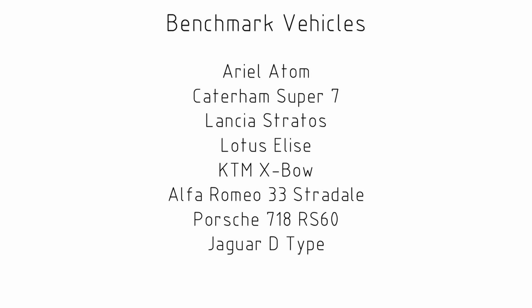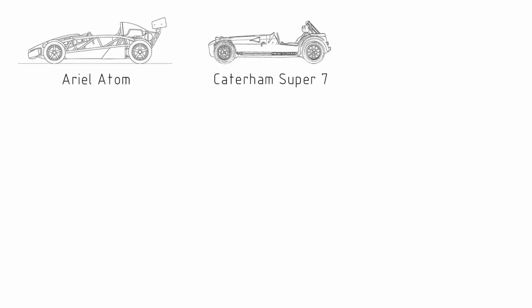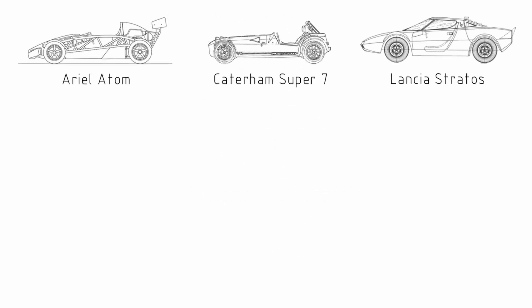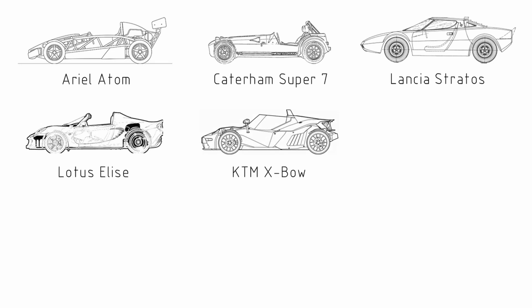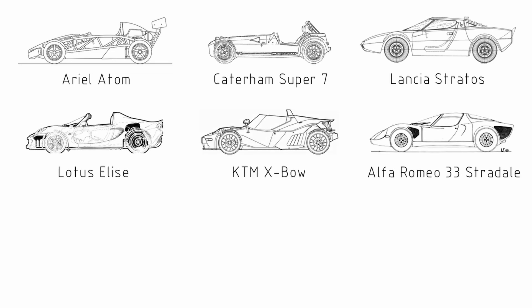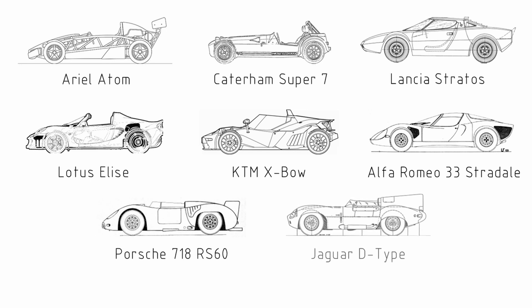We see the following vehicles — and we shouldn't be surprised, these are fairly lightweight, cutback, simple vehicles: the Aerial Atom, a Caterham Super 7 style vehicle, the Lancia Stratos, a Lotus Elise, a KTM Expo, the Alfa 33, a Porsche RS60, and the Jaguar D-Type. It's cars from this list that can help form benchmarks for this project moving forwards.